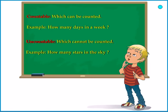Countable: which can be counted. Example: How many days in a week? Uncountable: which cannot be counted. Example: How many stars in the sky?